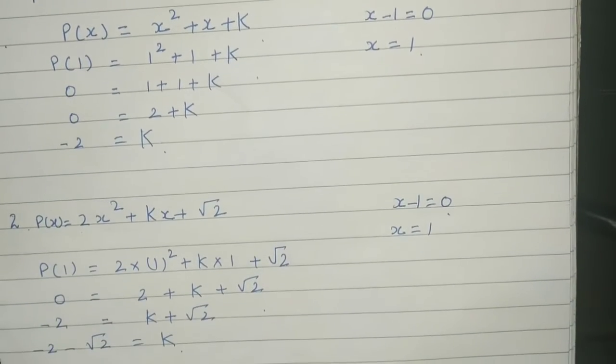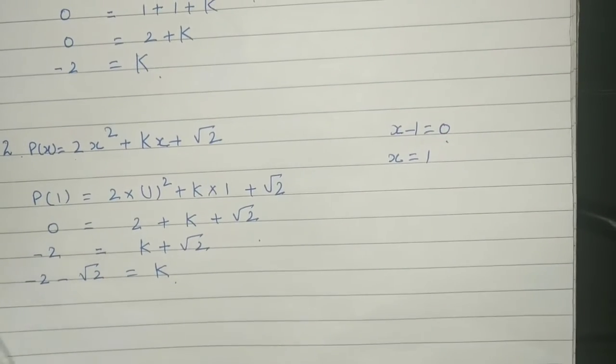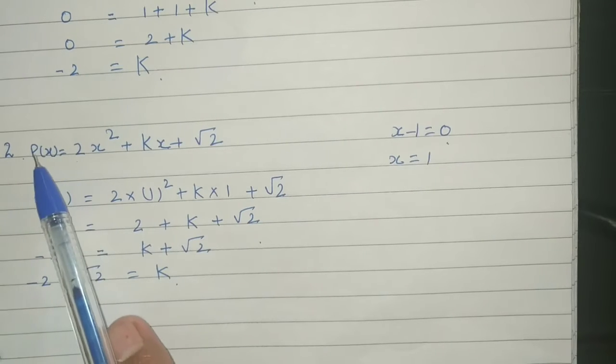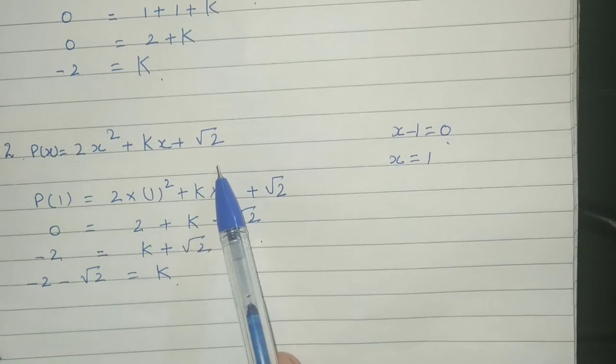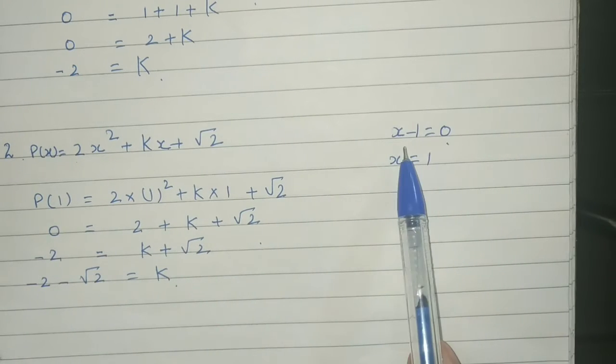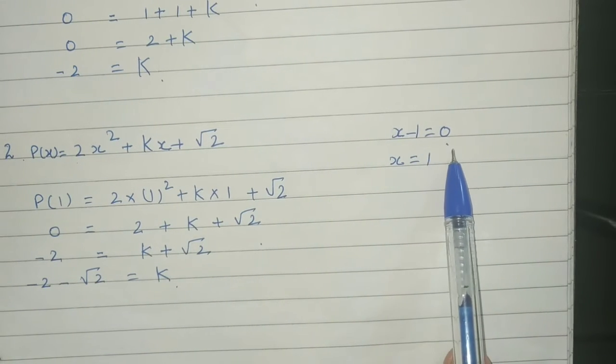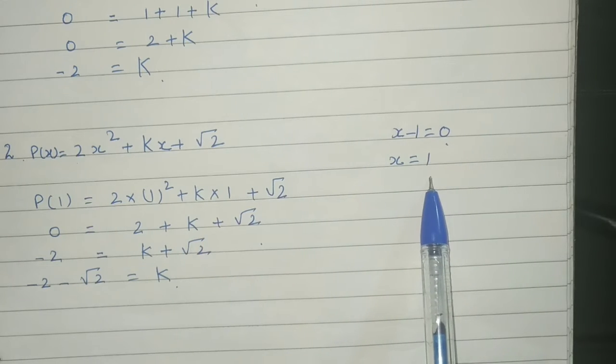Another example I am going to discuss with you. Polynomial with variable x: 2x squared plus kx plus root 2. Again, we will do x minus 1 is equal to 0. Value of x is equal to 1.